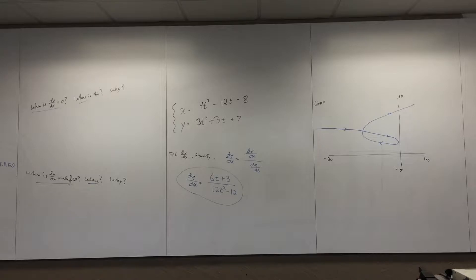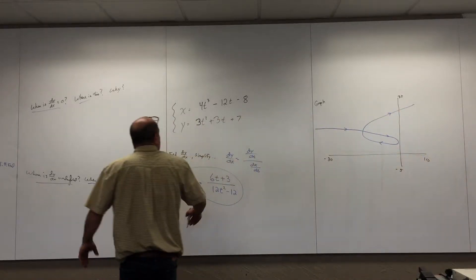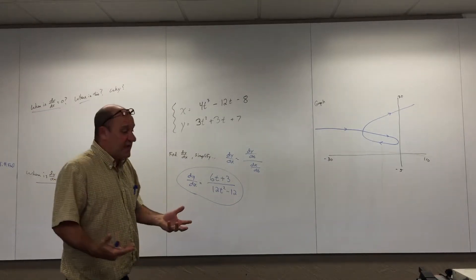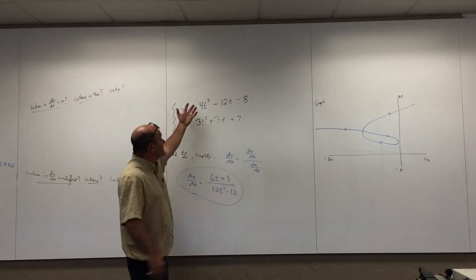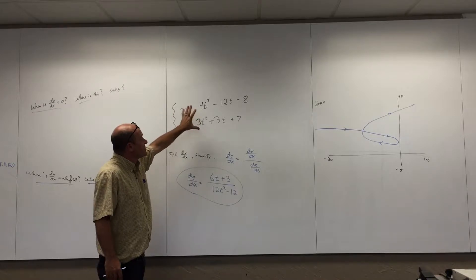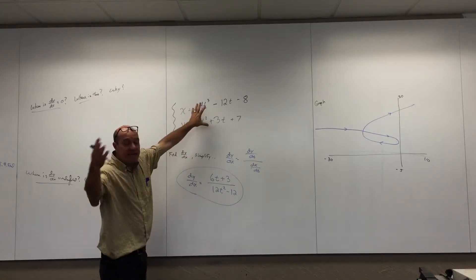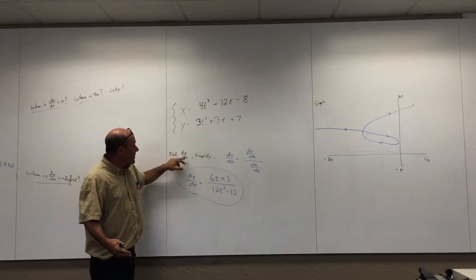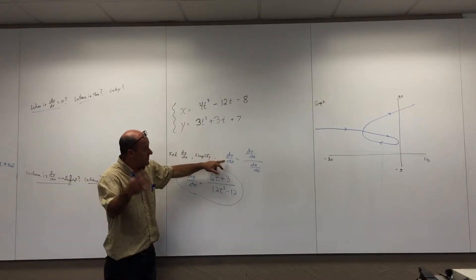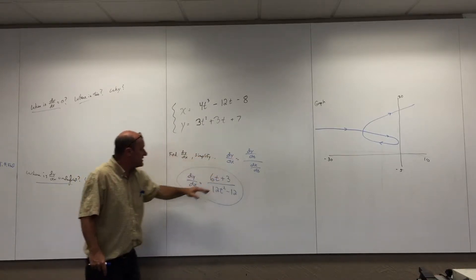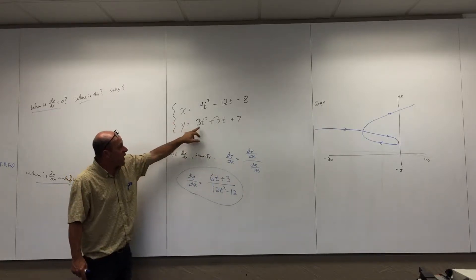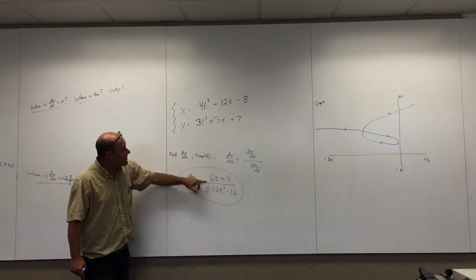We're in chapter 10 doing parametric equations. This is a classic mixture of 10-2 and 10-3. In 10-2, we look at parametric equations and sketch graphs, but in 10-3 we learned how to find the derivative. The derivative of a parametric equation, dy/dx, is simply dy/dt over dx/dt.